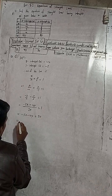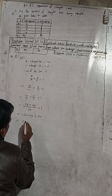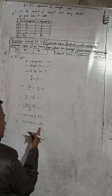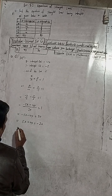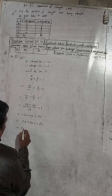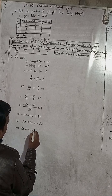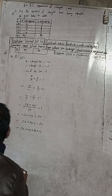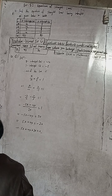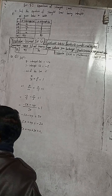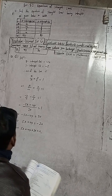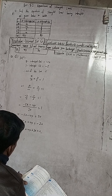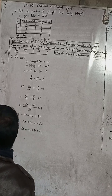Now change the sign: minus 5x becomes plus 5x, minus 4y becomes plus 4y, and 20 becomes minus 20. So 5x + 4y − 20 = 0, which equals 0. This is our required equation. The answer for part D, 4D, is 5x + 4y + 20 = 0 — correct answer.